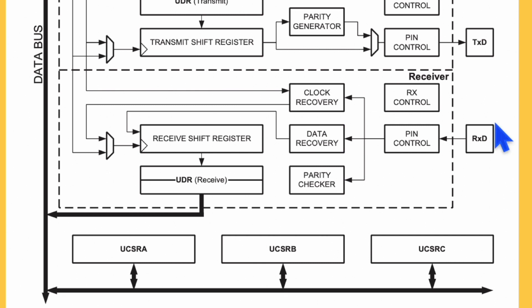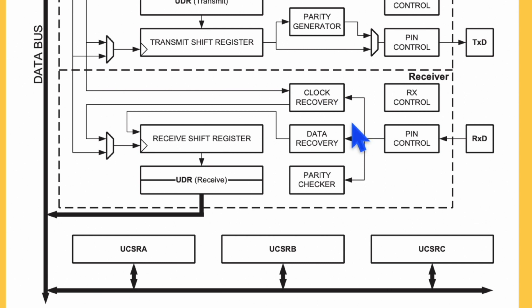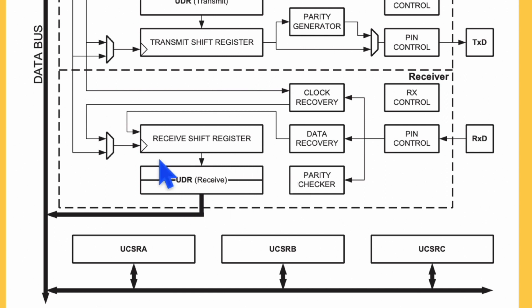On the receiver side, whatever data arrives on the RX line, the receiver first identifies the start bit through clock recovery — syncing its clock with the transmitter. Once the start bit is identified, data recovery begins for the 5 to 9 data bits, which are shifted into the receiver shift register. Parity check is also done, and once all bits are available in the receive shift register, they are moved to the UART receive data register.